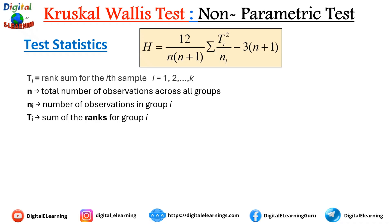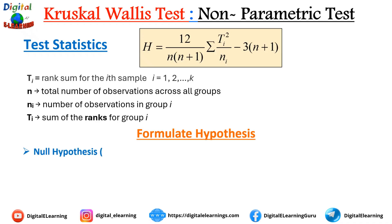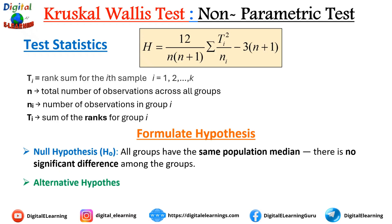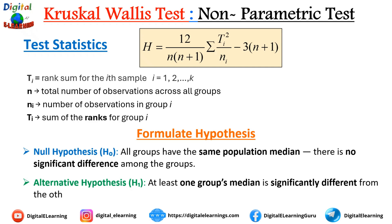Let us formulate the hypothesis. The null hypothesis H₀ is that all groups have the same population median — there is no significant difference among the groups. The alternate hypothesis is that at least one group median is significantly different from the others.